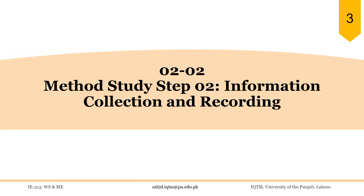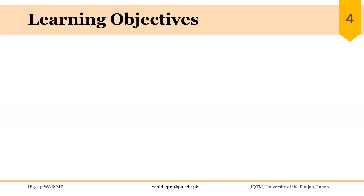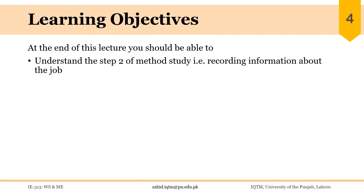This is a very important step in process analysis because we have to make sure two things, and the ultimate design of the process largely depends on those two things. One is to have the relevant data related to the process, and the second thing is the correctness of that data. So we should have relevant information and that information should be correct as well. At the end of this lecture you should be able to understand step 2 of process analysis or method study, that is recording information about the job.